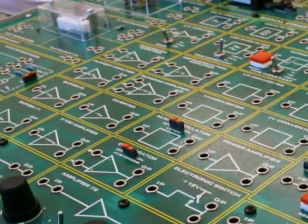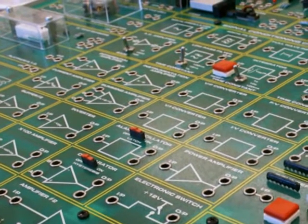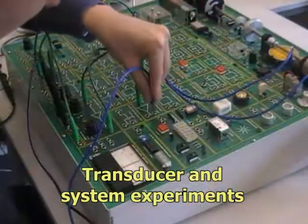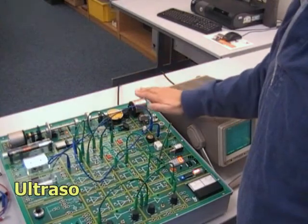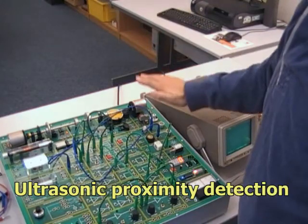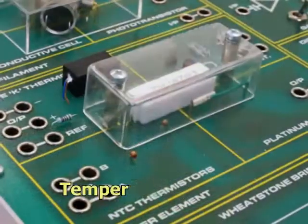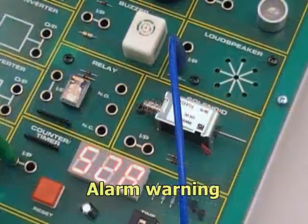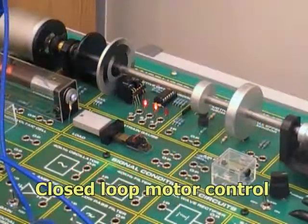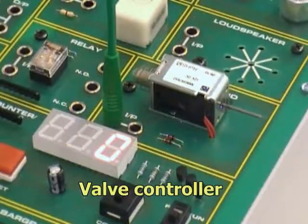The signal conditioning circuit blocks enable the learner to perform experiments with the transducers. They also enable systems to be investigated, for example, a proximity detection application using ultrasonics, an incubator temperature control, a digital thermometer, alarm warning, closed loop motor control and valve controller.